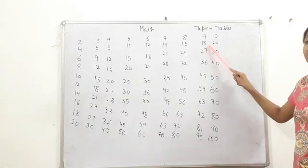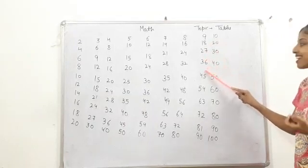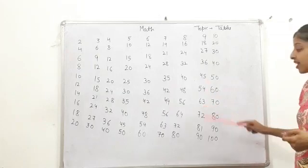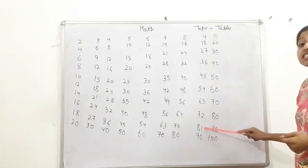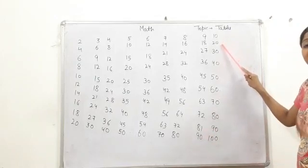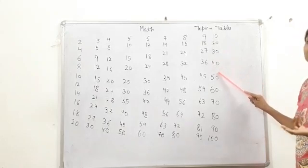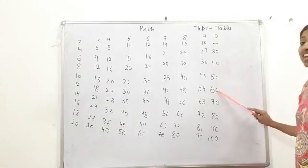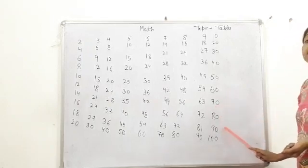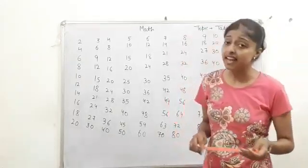Next, 9 ones are 9, 9 twos are 18, 9 threes are 27, 9 fours are 36, 9 fives are 45, 9 sixes are 54, 9 sevens are 63, 9 eights are 72, 9 nines are 81, and 9 tens are 90. 10 ones are 100. Students, they are 100. 10. Great.